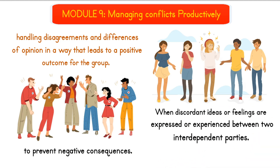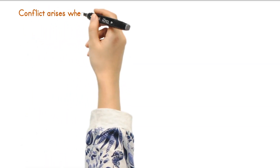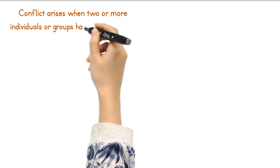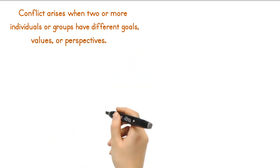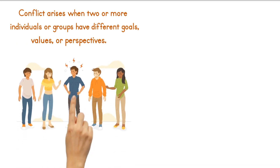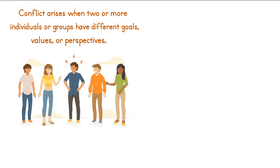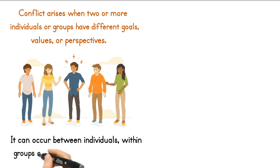This definition highlights the importance of communication in both the expression and management of conflict. At its core, conflict arises when two or more individuals or groups have different goals, values, or perspectives. Conflict can manifest in a variety of forms, ranging from minor disagreements to full-blown disputes. It can occur between individuals, within groups, or even between entire societies.